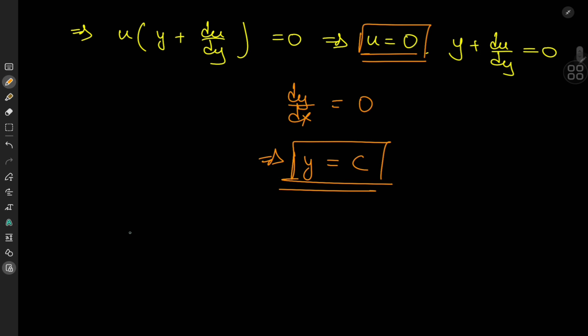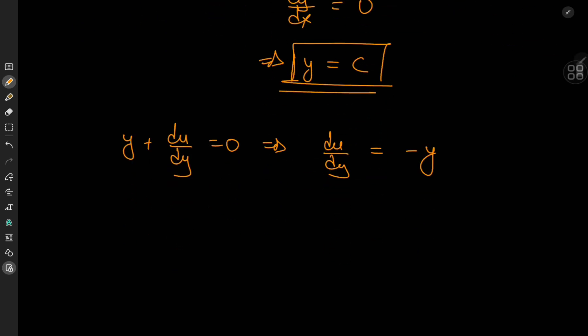Now for the other case, we have y plus du by dy equal to 0, which implies that du by dy equals negative y, which is a nice, simple, separable differential equation. So this implies that we have du equal to negative y dy.